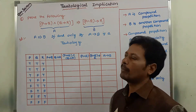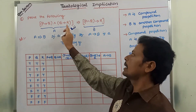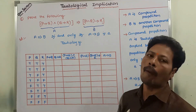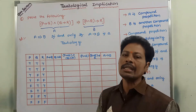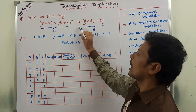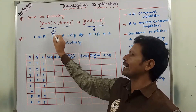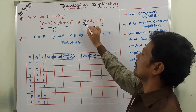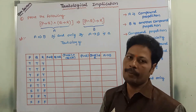Now, go to the example. Prove the following: P conditional Q, and Q conditional R, implies P and Q conditional R. This is the tautological implication symbol, called the implies symbol. Whatever compound proposition appears before the implies symbol is treated as B.